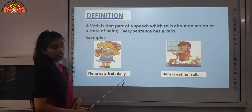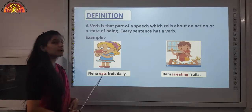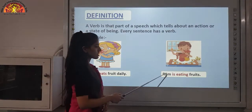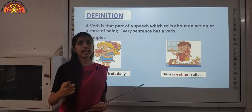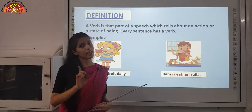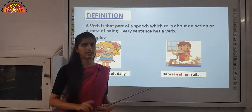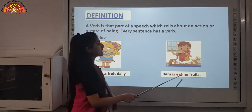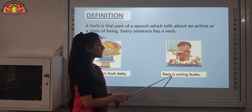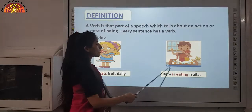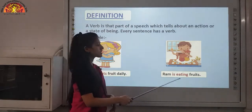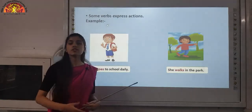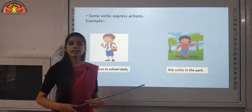Let us look at this example: Neha eats fruit daily. Here the action done by Neha is eat, so eat is the verb. Now in this sentence — Ram is eating fruits — as I said, it is not necessary that there should be only one verb. There can be more than one verb. Here we have two verbs: eating is the main verb and is is the helping verb.